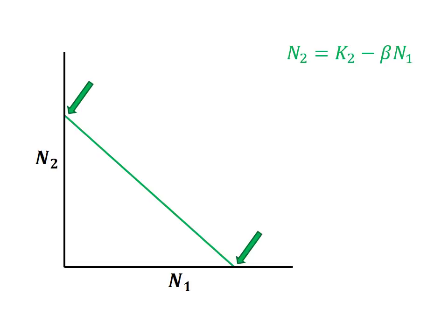Hopefully you were able to determine that when n1 equals 0, the isocline intercepts the n2 axis at a value of k2, or the carrying capacity of species 2. When n2 equals 0, the isocline intersects the n1 axis at k2 over beta.